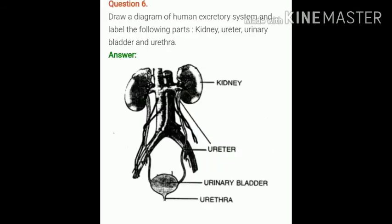Question number 6. Draw a diagram of human excretory system and label the following parts. Draw the diagram in the white sheet of your notebook and label these four parts: kidney, ureter, urinary bladder, and urethra. Draw it neatly and label all the parts on the right-hand side.